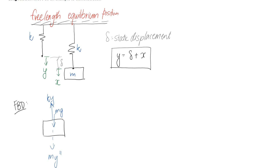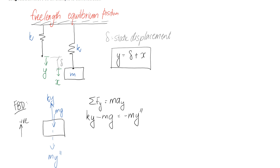Now what we want to do is figure out the equation of motion. I'm going to assume that the upward direction is positive. When we sum forces in the y direction equal to mass times acceleration in y: ky is pointing upwards so it's positive, mg is pointing downwards so it's negative, and the mass times acceleration term is pointing down so it's negative mÿ. Rearranging — shifting terms to get: mÿ + ky = mg.